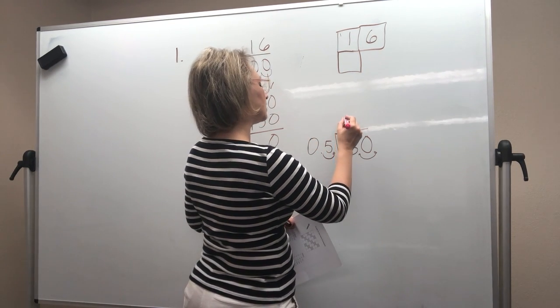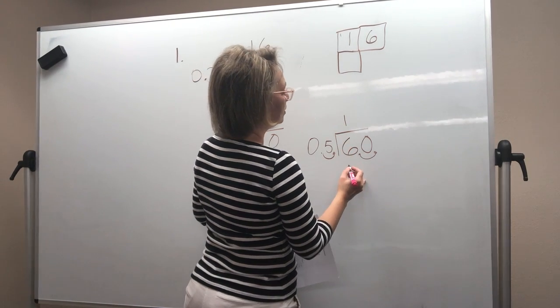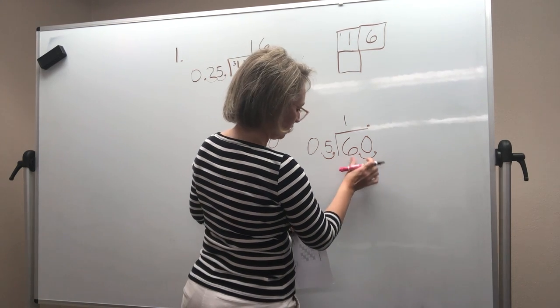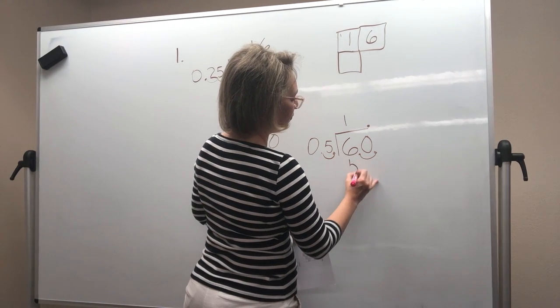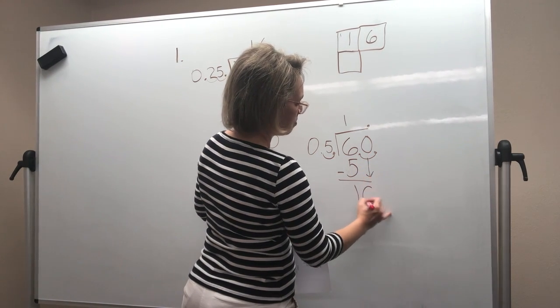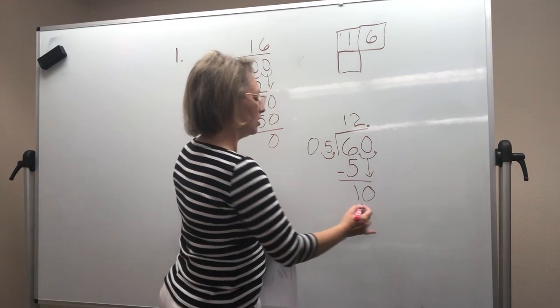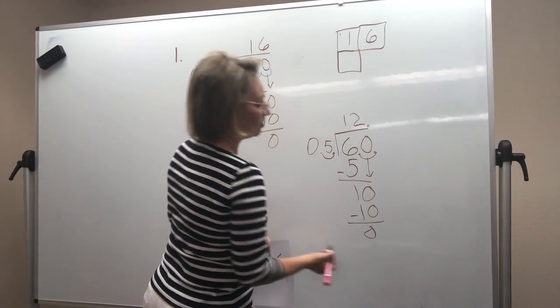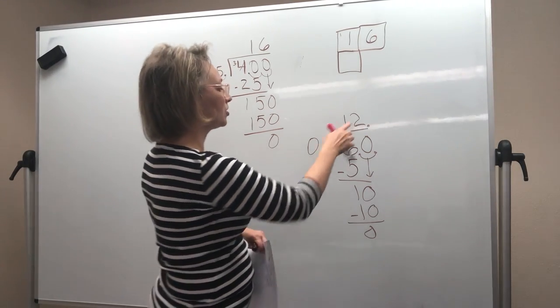5 goes into 6 one time. One time, let me put my answer decimal there. 1 times 5 is 5. Subtract and we have 1. Bring down that 0. 5 goes into 10, 2 times 5. 2 times 5 is 10. I subtract and have a remainder of 0. So my answer is 12.